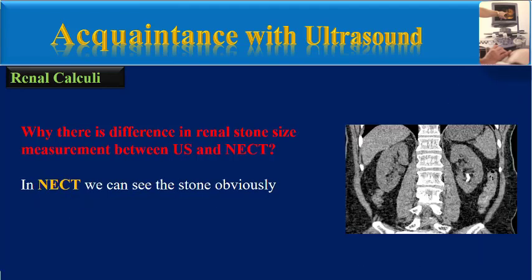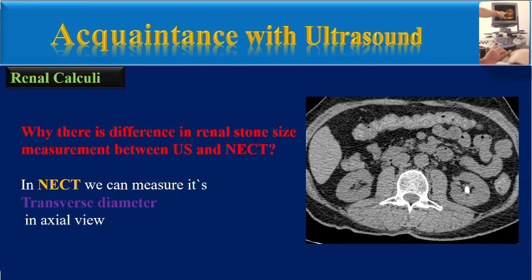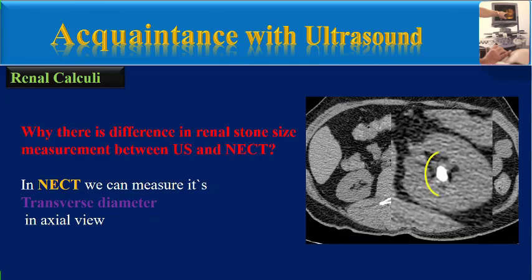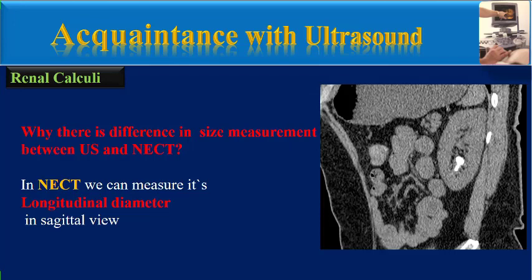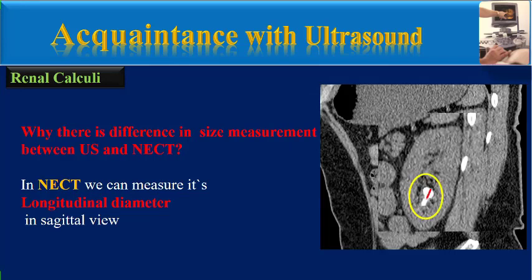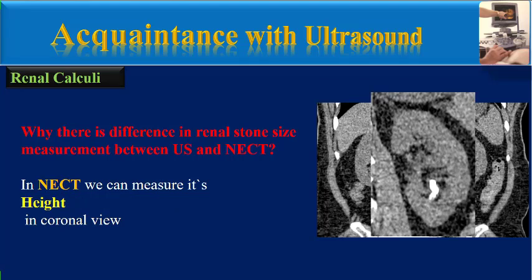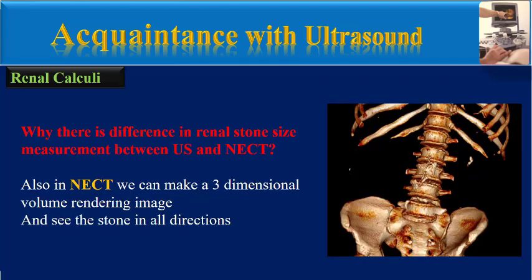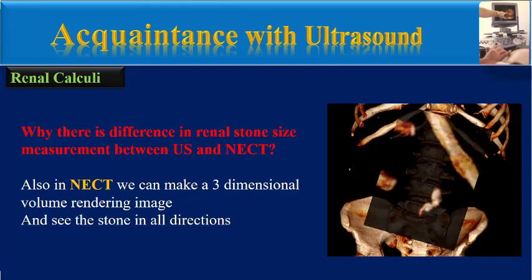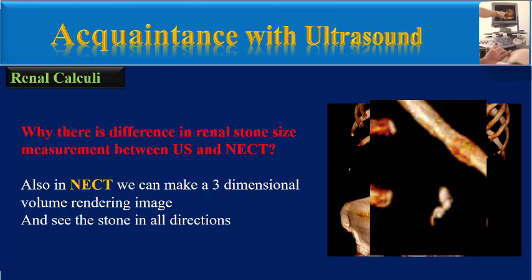In non-enhanced CT, we can see the stone clearly. We can measure its transverse diameter in the axial view, its longitudinal diameter in the sagittal view, and its height in the coronal view. Also, in non-enhanced CT we can make a three-dimensional volume rendering image and see the stone in all directions.